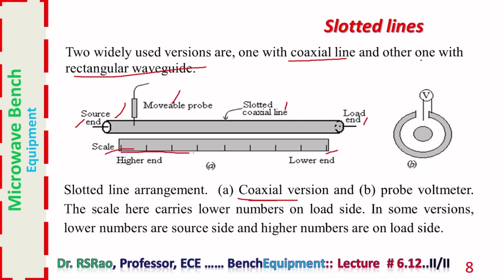Here is shown the coaxial version: a coaxial line with a movable probe, plotted coax, source end and load end. By the side of the coax a scale is provided — higher end and lower end. The scale is required to know the position of the probe. We need to locate minima in the standing wave pattern and know the distance between two consecutive minima — this is the procedure to find guide wavelength from measurement. The probe is a small wire that senses the field strength and gives out a voltage.